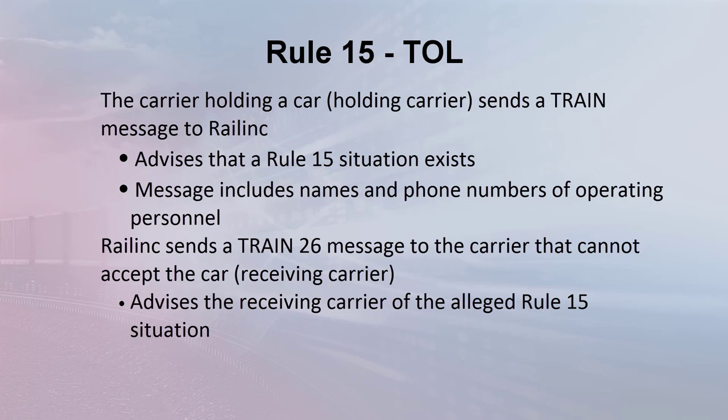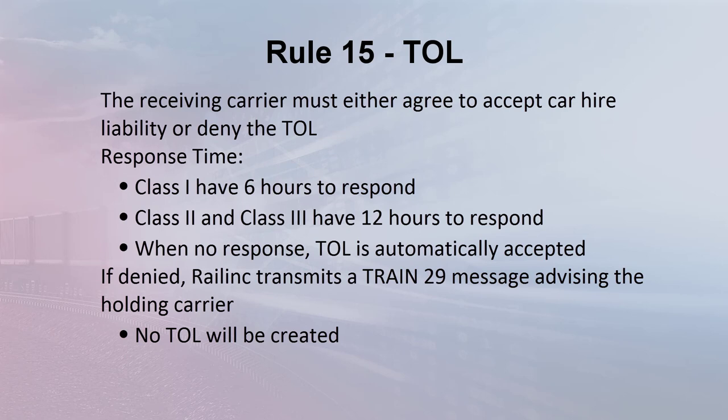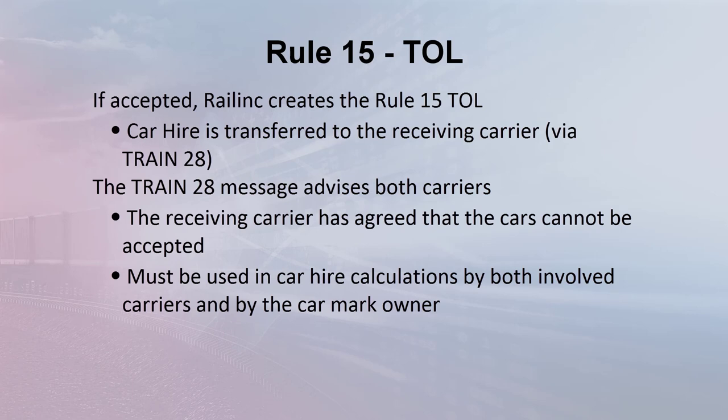The receiving carrier must reply to the advice that relief has been requested. The receiving carrier can agree that it cannot accept the cars and accept the CarHire liability, or reject the claim that cars cannot be accepted. Class 1 carriers have 6 hours to respond and other carriers have 12 hours to respond. When there is no response, the transaction is treated as though the carrier accepted liability. If the TOL is rejected, Railink will create a message advising the delivering carrier that there are no problems with the interchange. If the TOL is accepted, Railink will create a Train 28 message to advise both carriers that liability has been transferred. The TOL message must be used by both carriers in their liability calculations — no reclaim is required because LCS and TOL messages show the car in the proper CarHire account.